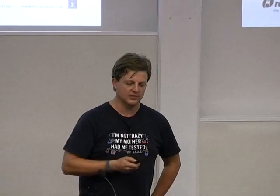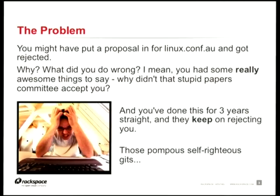I work for Rackspace on upstream OpenStack. The problem is: you put a proposal into the CFP, it got rejected, but you thought it was a pretty awesome abstract and a fantastic talk. You thought you could be just like Rusty one day, but that stupid bunch of self-righteous gits on the papers committee didn't accept your talk — and they've been doing it for the past three years. What am I doing wrong?